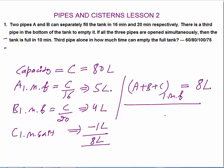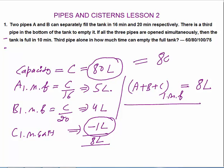Now what was the question? The third pipe alone will empty the full tank in how many minutes? Pipe C exits 1 liter per minute, so to empty the full tank of 80 liters, pipe C requires 80 minutes. The answer is 80 minutes.